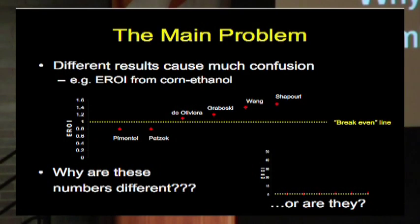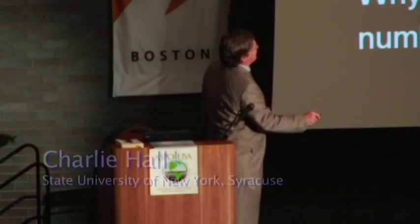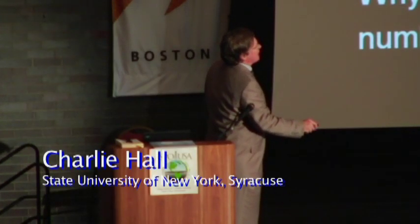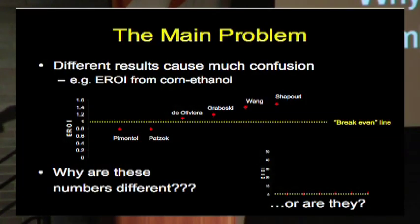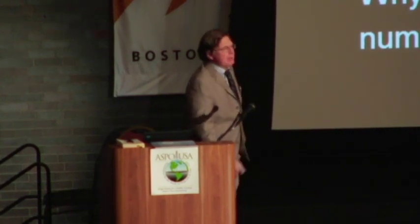These are different estimates of energy return on investment from alcohol, fuel from corn that Cutler was talking about. These are published statements, but let's put them on a graph where the energy return on investment doesn't go from 1.6 to minus something, but in fact it goes from 0 to 50. It doesn't make any difference. This is a stupid, stupid fuel for all kinds of reasons, and I'm just getting started.